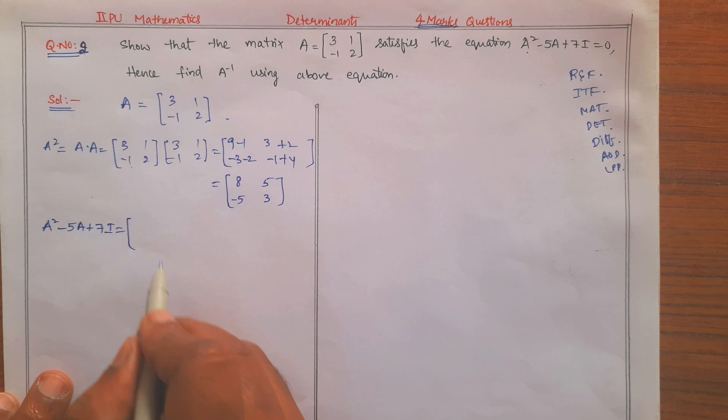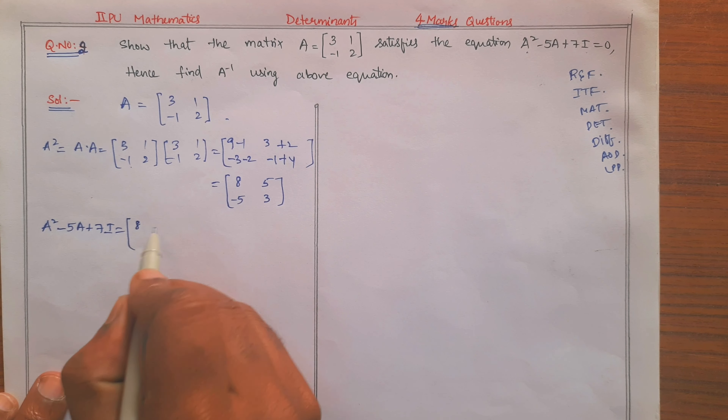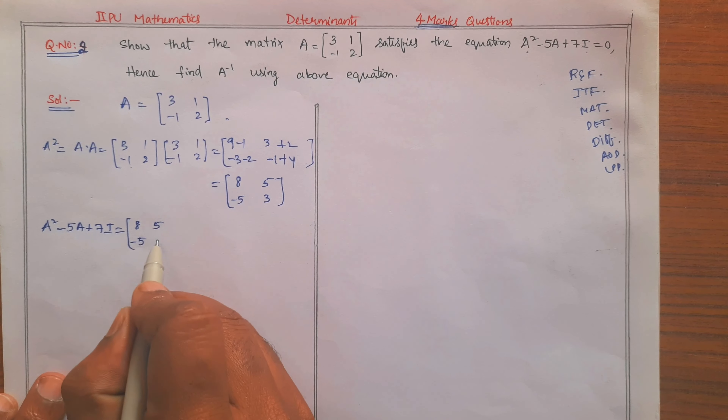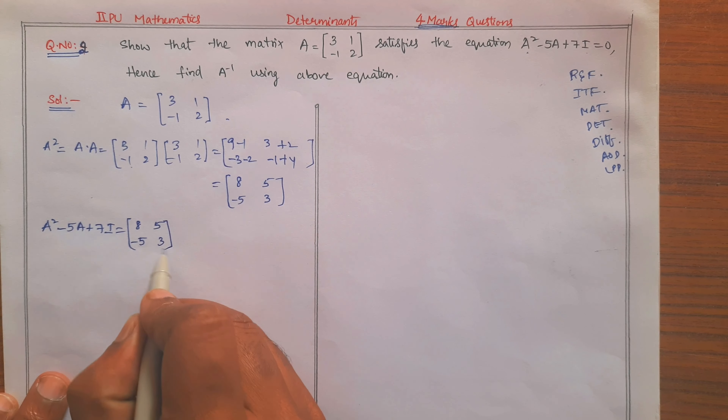Computing A²: 3×3 + 1×(−1) = 8; 3×1 + 1×2 = 5; (−1)×3 + 2×(−1) = −5; (−1)×1 + 2×2 = 3. So A² = [8, 5; −5, 3].